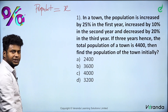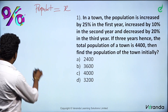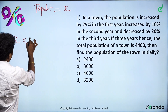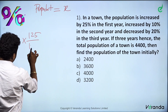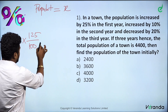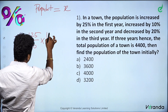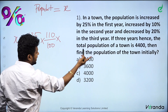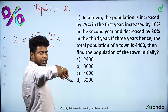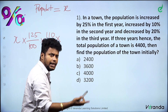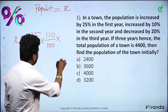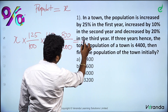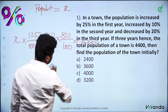We have x population. What do we do? There is a 25% increase, so we multiply by 125/100. Then there is a 10% increase, so we multiply by 110/100. Finally, there is a 20% decrease, so we multiply by 80/100. The result equals 4400.